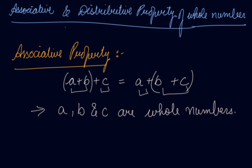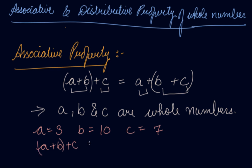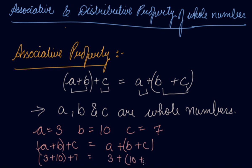For example, let's take a = 3, b = 10 and c = 7. So let's apply the associative property, which says a + (b + c) is equal to (a + b) + c. On the left side, a = 3, b = 10 and c = 7. On the right side, a = 3, b = 10 and c = 7.